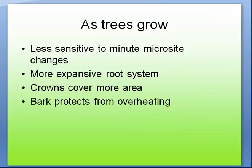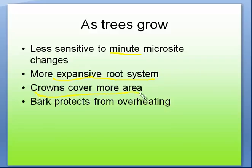As trees grow, they're less sensitive to minute microsite changes. A little change in soil moisture doesn't matter because root systems are now vast on larger trees. Crowns are larger so they can take more advantage of photosynthesis. Bark on the tree is heavier on most species, so overheating is less of an issue and there's less stress on the tree. As trees get older, they get tougher.